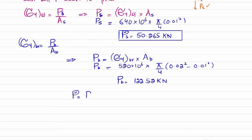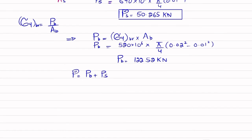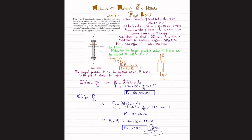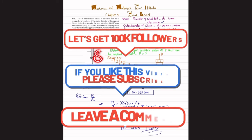Since P equals Pb plus Ps, we substitute the values: 50.265 kN plus 122.52 kN, which gives P equals 173 kN. So this is the maximum load P that can be applied on this steel bolt having a bronze sleeve bonded to it.